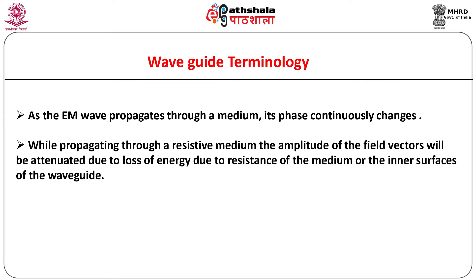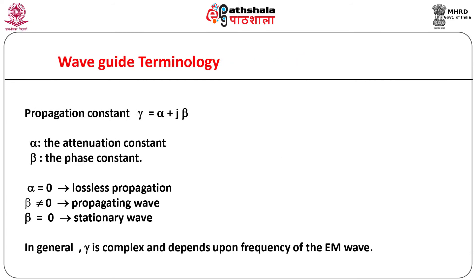As the electromagnetic wave propagates through a medium, its phase continuously changes. If there is no opposition by the medium, no energy is lost and the amplitude of the field vectors remains constant. However, while propagating through a resistive medium, some part of the energy may be lost due to resistance of the medium or the inner surfaces of the waveguide, and the amplitude of the field vectors will be attenuated. Propagation is characterized by the propagation constant gamma = alpha ± jβ, where alpha is the attenuation constant and beta is the phase constant.